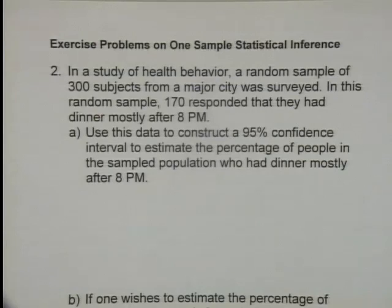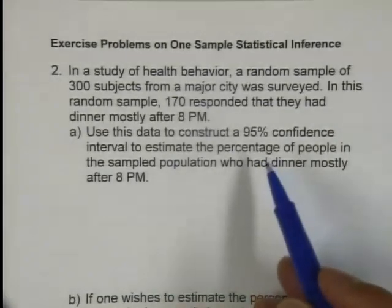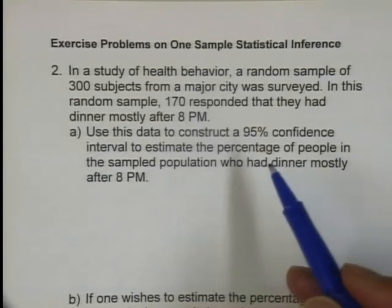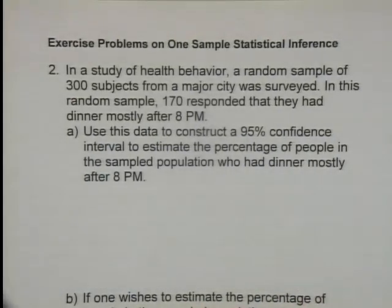So you surveyed 300 subjects from this city and 170 of them responded that they had dinner after 8 p.m. Probably big city, often people do that. So I want to construct a 95% confidence interval estimate for that. And how do you do that?